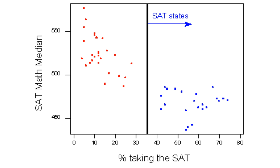It turns out that the two clusters represent two groups. The blue group on the right represents the states where the SAT is the test of choice for students and colleges. And the red group on the left represents the states where the ACT college entrance examination is commonly used. It makes sense, then, that in the ACT states on the left, a smaller percentage of the students take the SAT.